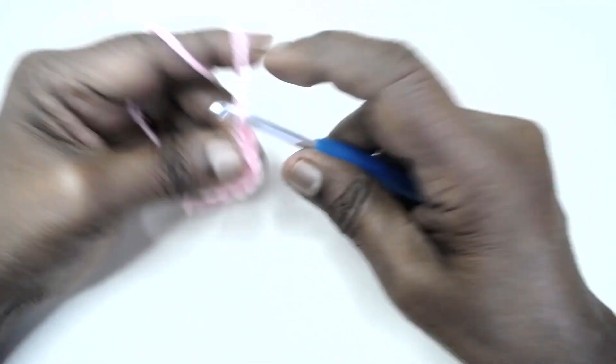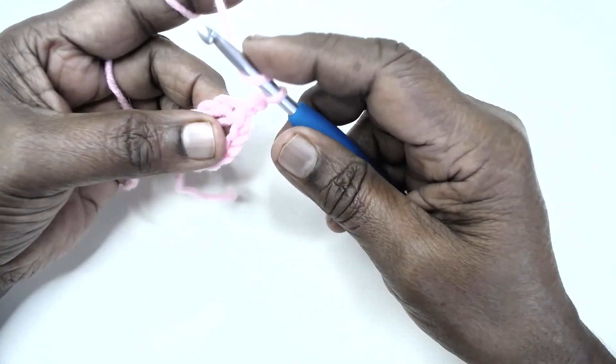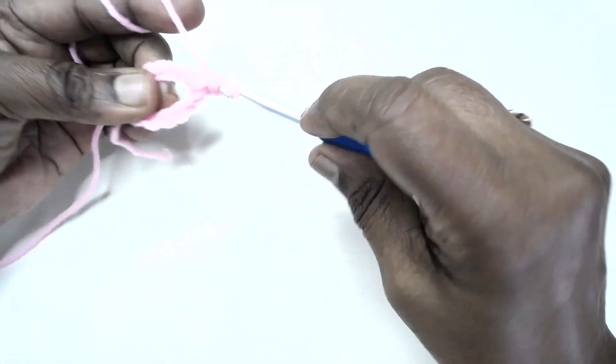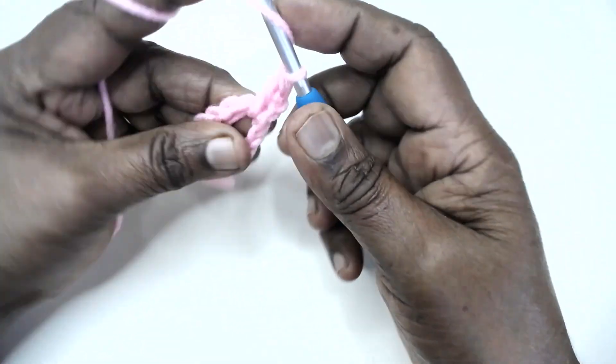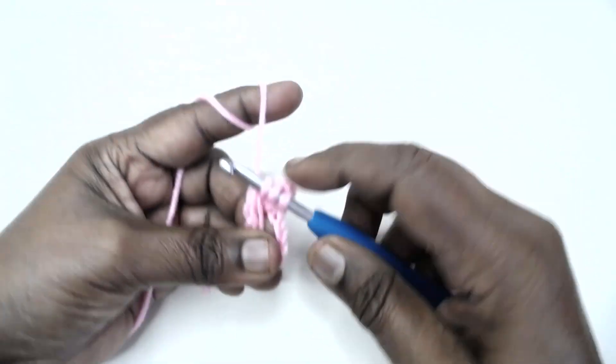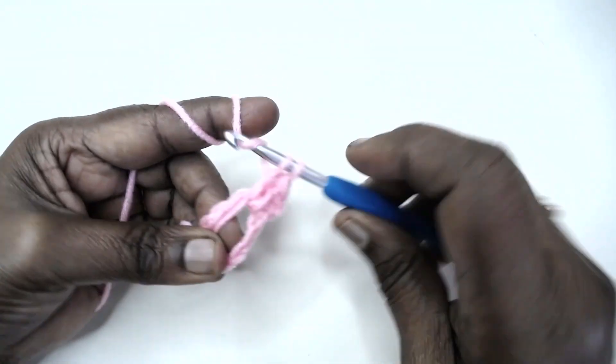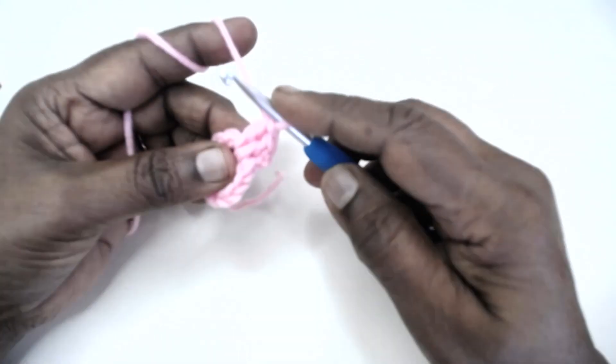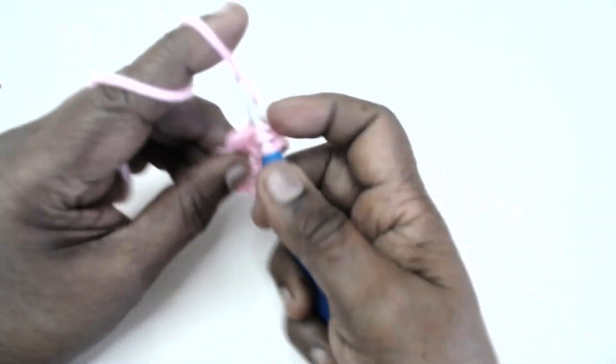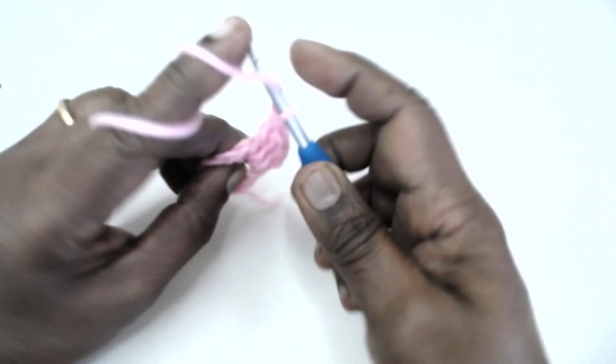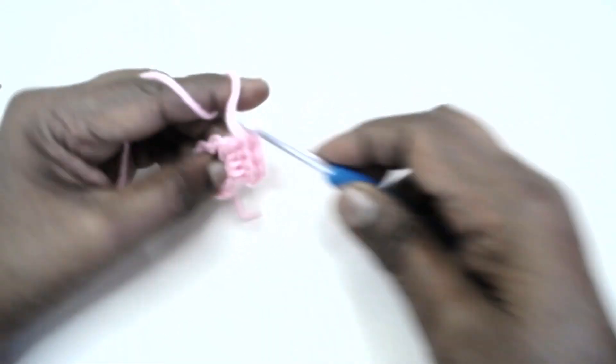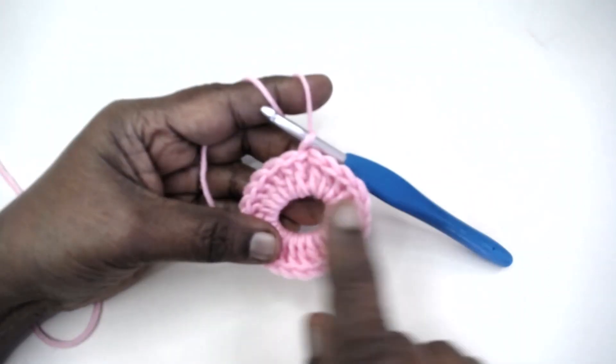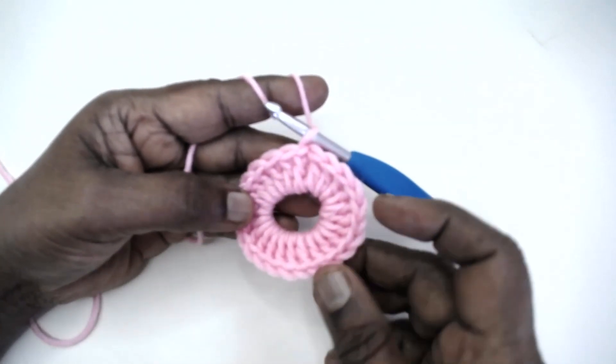Now make 24 double crochets into the ring. Place 24 double crochets. At the end of making 24 double crochets in the ring, I have slip stitched and joined to the first double crochet.